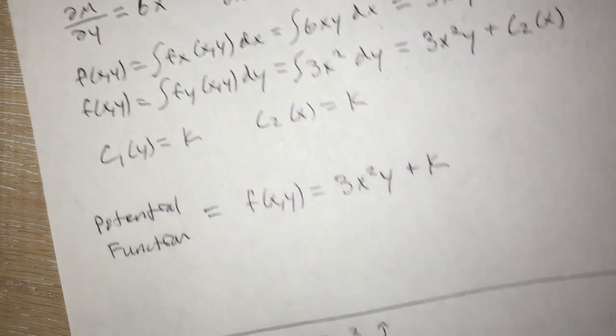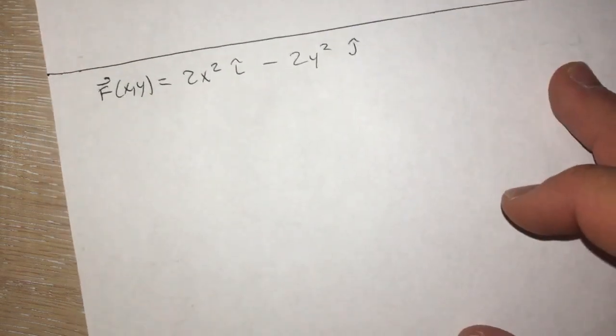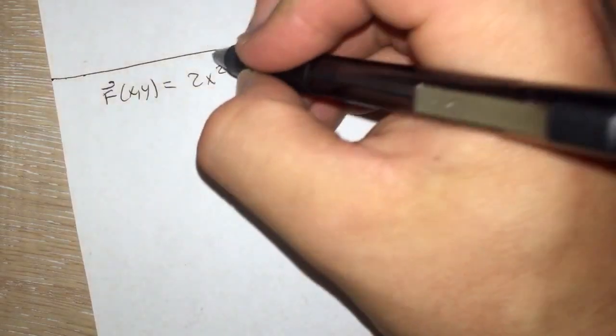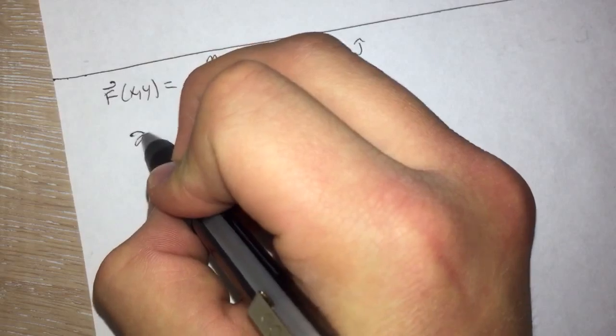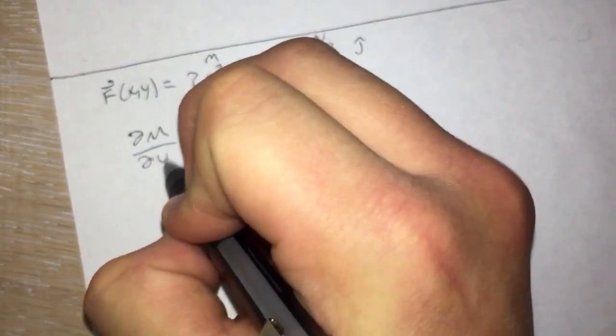Okay. So now the next one we have here. Once again we're going to start off making sure that this is conservative. So we have our m and our n. So we take the partial derivative of m with respect to y.